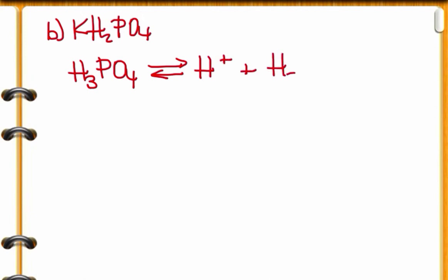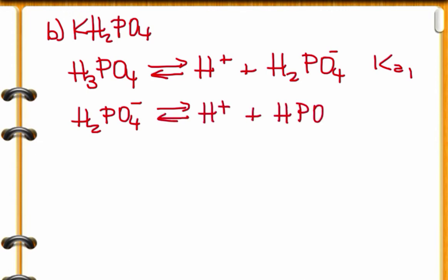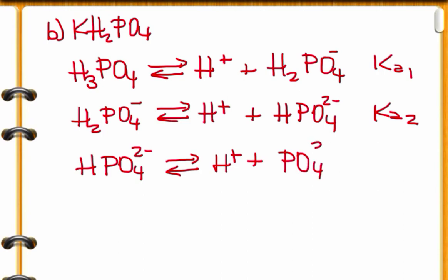The step one that we looked at before, the first step that gives off the first proton and generates H2PO4 minus. That will be the K1. And then the second step, H2PO4 gives off the second proton and becomes in equilibrium with HPO4 2- now, K2. And finally, when all protons are gone now, HPO4 2- gives off the last proton and it becomes phosphate, PO4 3-. That's K3.